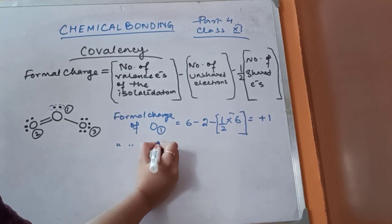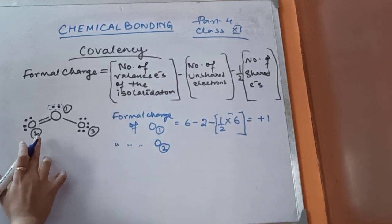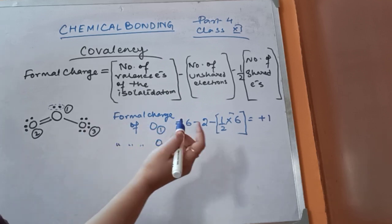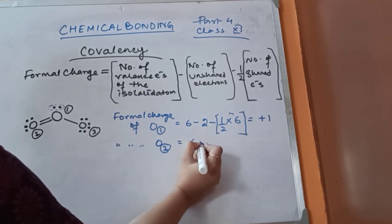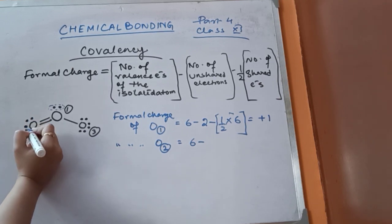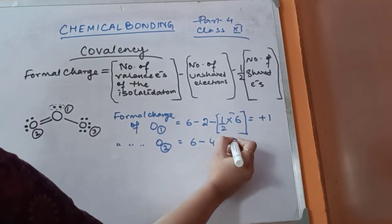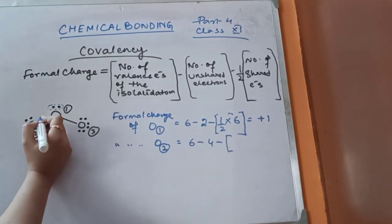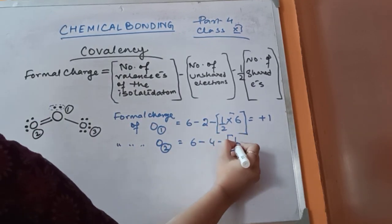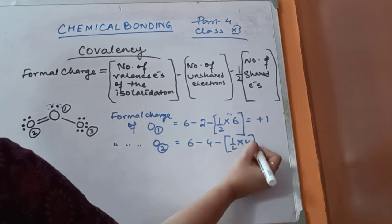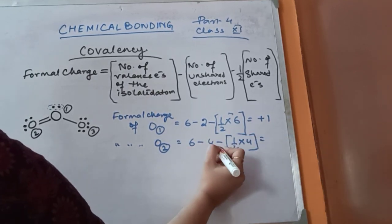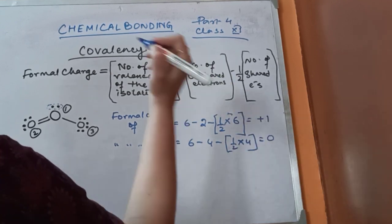The formal charge of O2 — the number of valence electrons of oxygen is 6. Number of unshared electrons: 4. Number of shared electrons: 2 for this bond and 2 for this bond, giving 4, so half of 4 is 2. So: 6 minus 4 minus 2 = 0. The formal charge of O2 is 0.